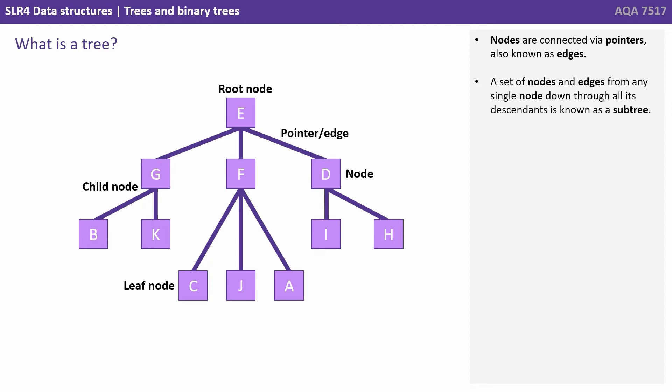A set of nodes and edges from any single node down through all its descendants is known as a subtree.